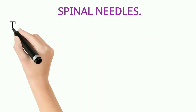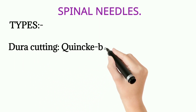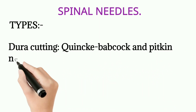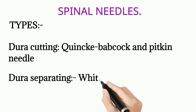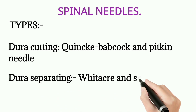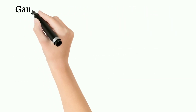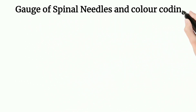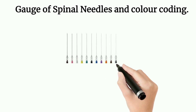Spinal needles are of two types. First type is dura-cutting: the Quincke needle (also called the pink-bevel needle). Second type is dura-separating: the Sprotte needle (pencil-point needle). These are the two types of spinal anesthesia needles. They also follow a gauge size and color coding system.